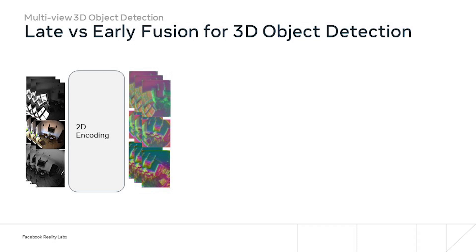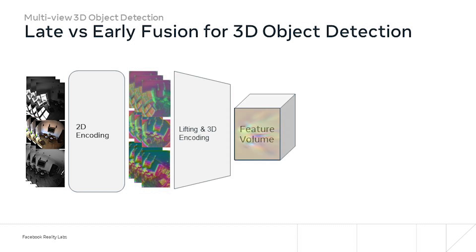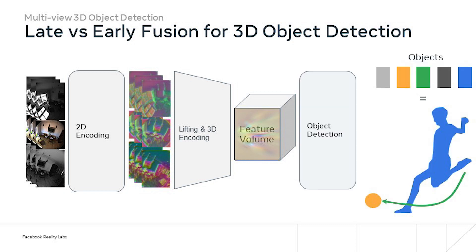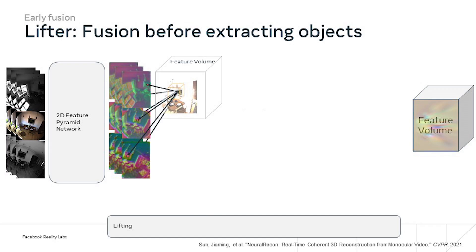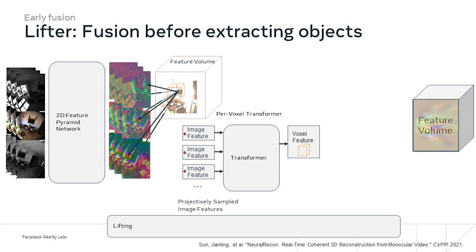Now switching to exciting work on early fusion. This was work with an intern called Johanna, who's actually in the room. Here, we performed 2D encoding per frame, and then instead of detecting objects on these 2D encodings, we first lift these into a 3D feature volume — a grid of features — and then perform object detection in 3D using a 3D CNN. We have a 2D feature network that produces 2D feature maps per frame, and then for every voxel in our feature volume, we sample the 2D features that the voxel center projects to, and use a transformer per voxel to fuse the features. These voxel features are then fused using a 3D feature network.